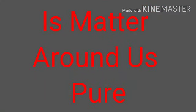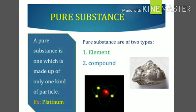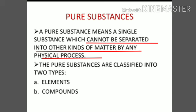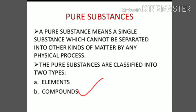Hello everyone, since you all are having your exam, let's revise our second chapter that we have already learned. In this chapter we learned about pure substances. A substance is said to be pure if it is made up of only one kind of molecules or particles. Pure substances normally cannot be separated by simple physical methods and they are largely classified as elements and compounds.